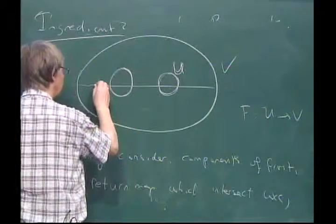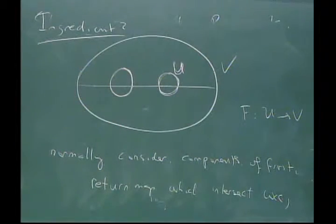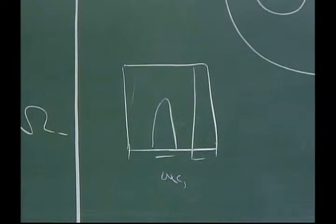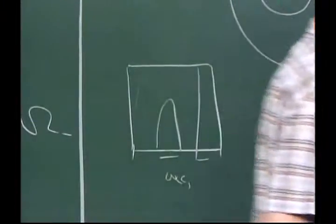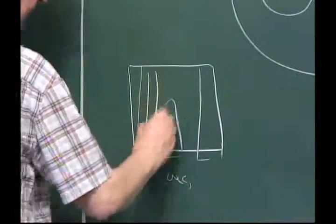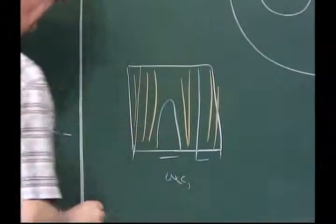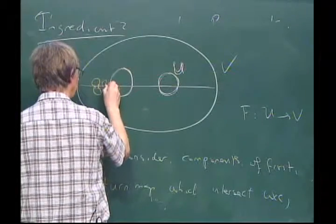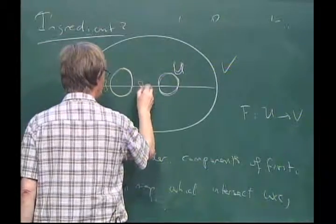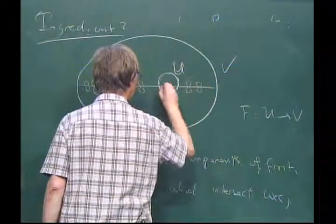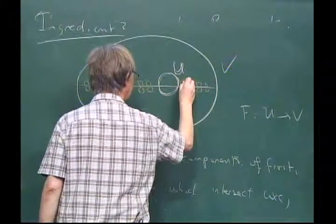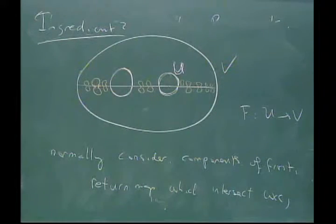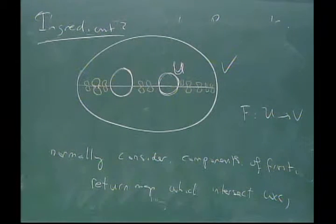Moreover you want different domains to be pairwise disjoint. You carefully choose things so that the domains intersecting ω_c are disjoint — that's the situation here. But that's not enough: we want to show the map is a global quasi-symmetric map, so we want to also consider the points that don't stay in this set. So ingredient two is to extend this and look at all the other domains of the first return map.